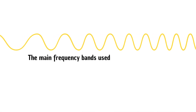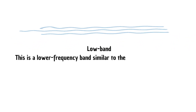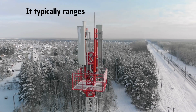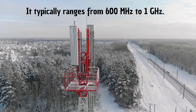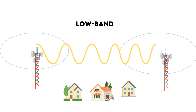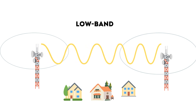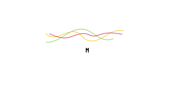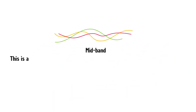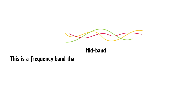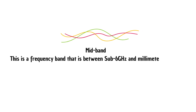The main frequency bands used in 5G are: Low-band — a lower frequency band similar to frequencies used in 4G networks, typically ranging from 600 MHz to 1 GHz. Low-band radio waves can travel long distances and penetrate buildings, making them highly prized by carriers looking for reliable coverage. Mid-band — a frequency band between sub-6 GHz and millimeter waves, typically ranging from 2 to 6 GHz, offering a balance between speed and coverage.